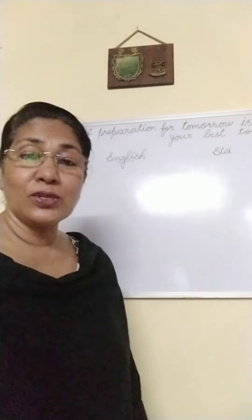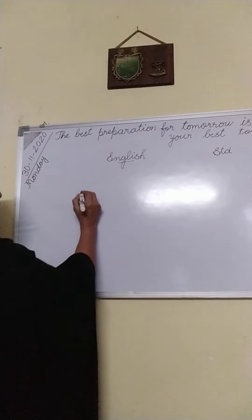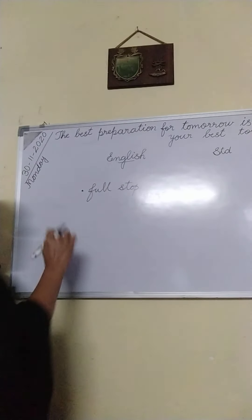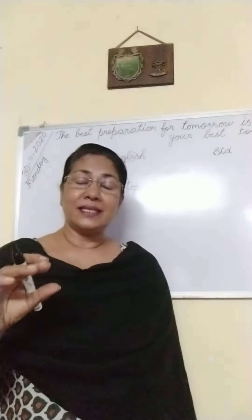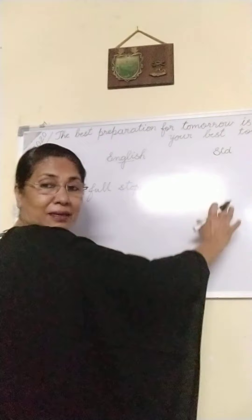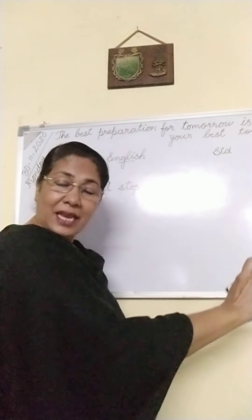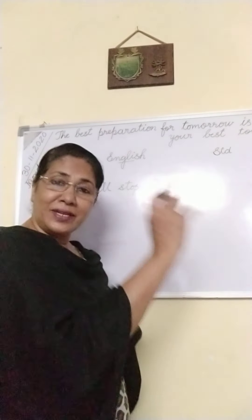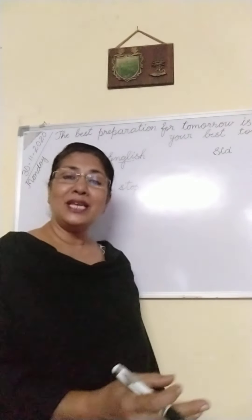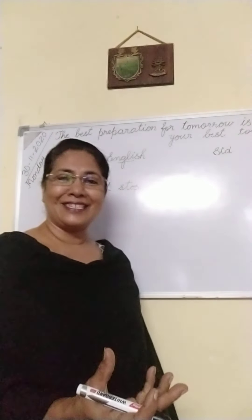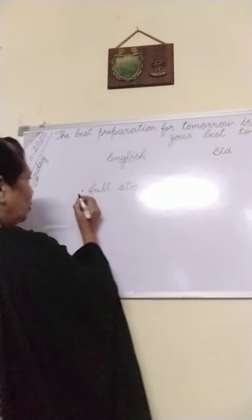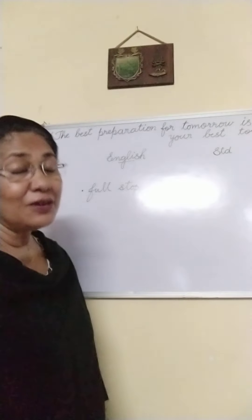Full stop is used — where do we use full stop? When a sentence is completed, we use a full stop. A sentence is completed to show that it has a meaningful sense in it. That is called a sentence. And when that sentence is finished, we use a full stop. But many of y'all do not use full stop — after the sentence is completed, you put a dot like this. This is called the full stop.